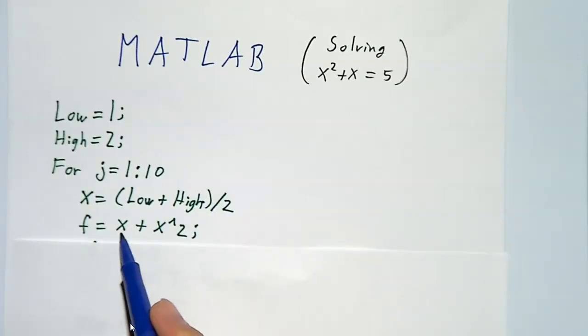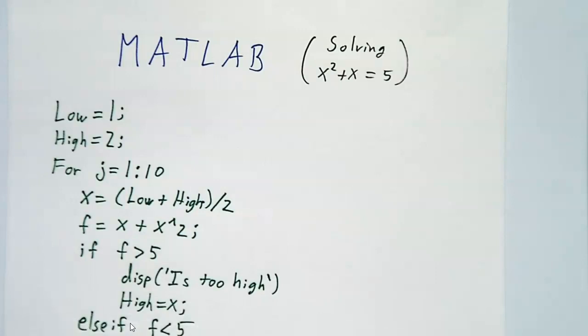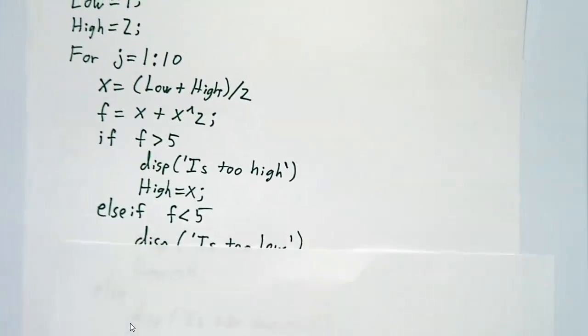And each time, our new guess is going to be halfway between the lower number and the higher number. And we're going to figure out what f is. That's x plus x squared. And then what happens next depends on whether f is too low, too high, or just right.